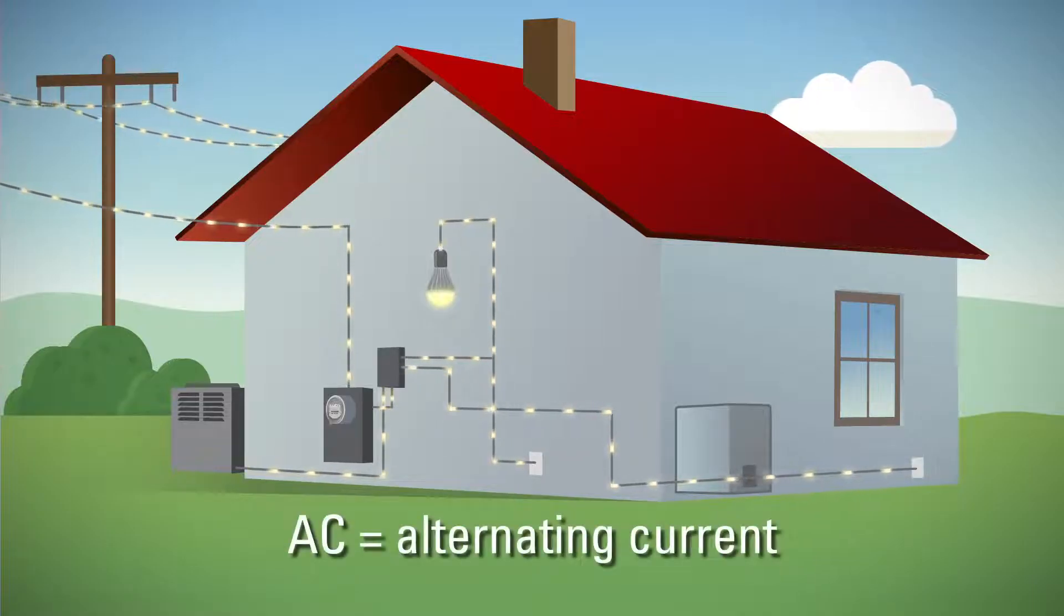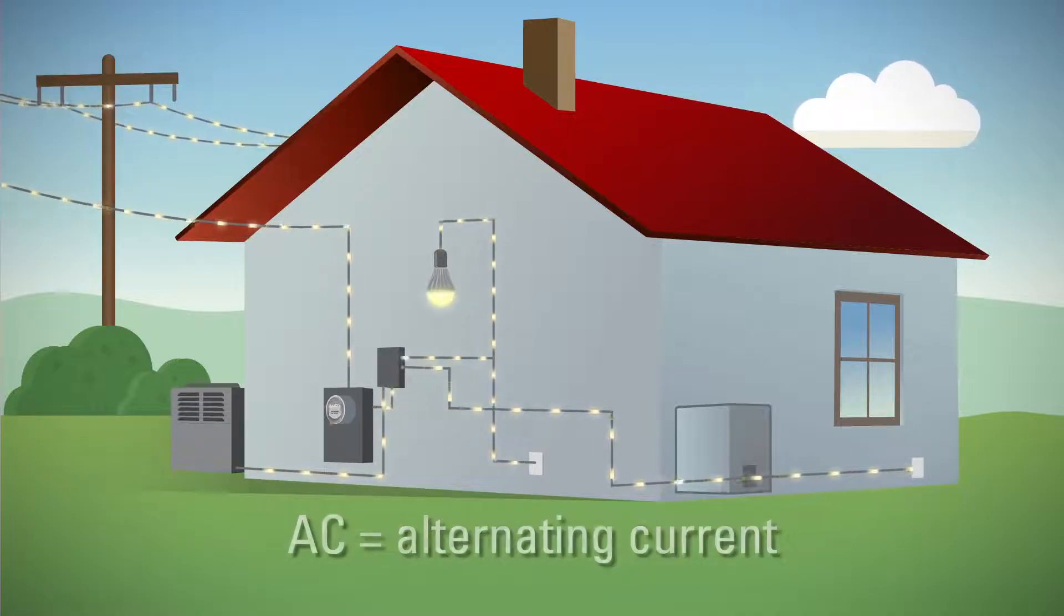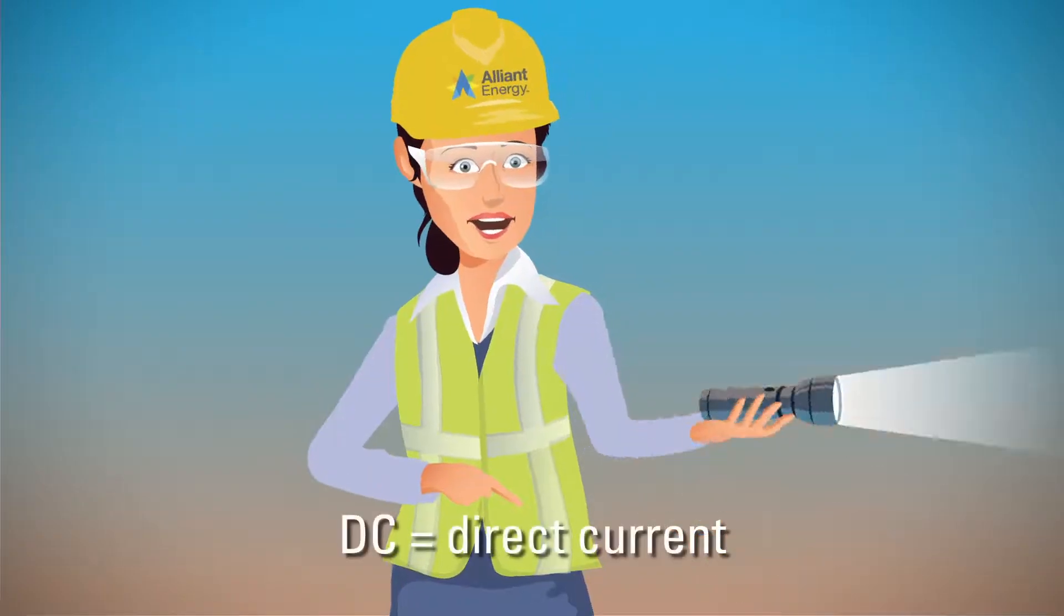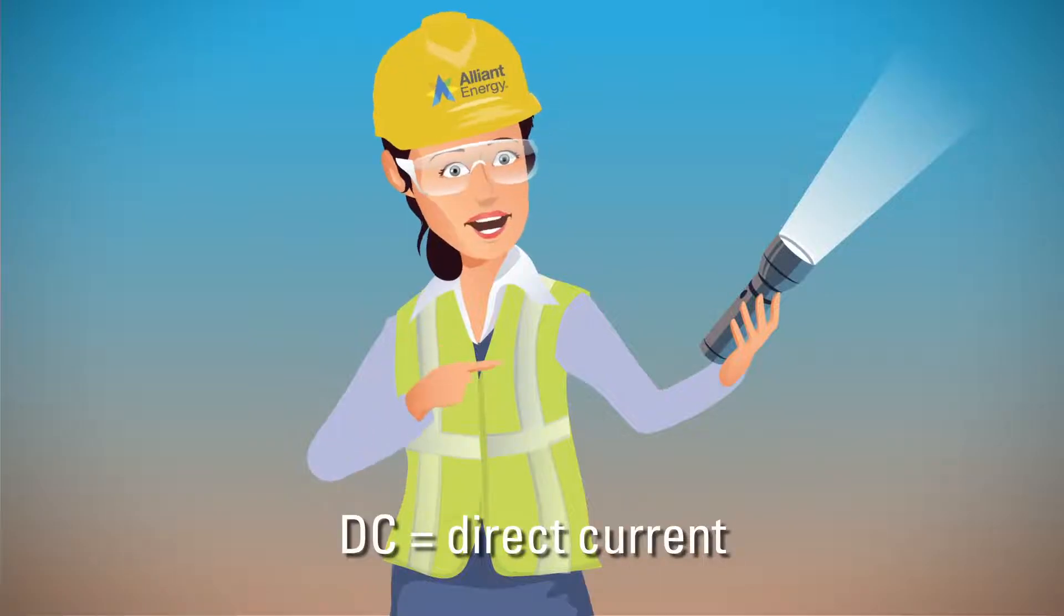The electricity that flows through the wires in your home is an alternating current. That means it can reverse direction. A current from a battery goes in only one direction. That's called direct current.